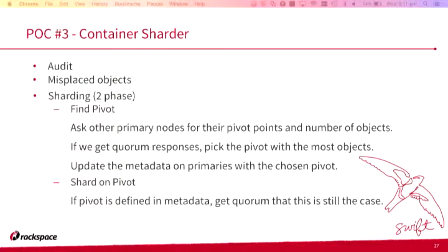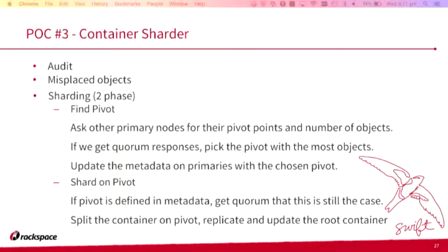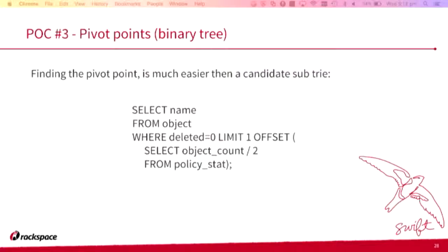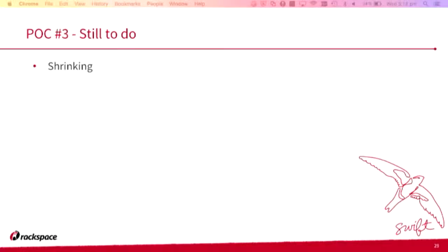Now we don't have to recursively grind through a big tree to find a good candidate subtree — it's almost free to get the pivot point whenever we need it. The pivot point ranges are kept in separate tables. Everything is done in the container server and container sharder, making it really clean. Most of the code is simplified. Unfortunately I can't show it off just yet — maybe next LCA.